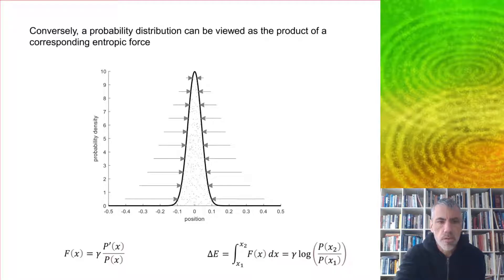The equation for the entropic force is given by this one here: gamma times p prime over p, where p is the probability curve. The energy involved in moving from one place to another is going to involve a logarithm of the final propensity divided by the initial propensity.